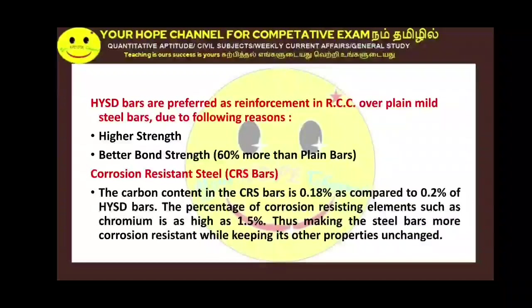If you use high yield deformed bars, the benefit is better corrosion resistance. Corrosion resistance steel has a carbon content of 0.18% to 0.2%. If the carbon content is in this range, you can call it corrosion resistant. Corrosion resistance steel has a maximum of 1.5% carbon. If you add any alloying element, you can change any property and fabricate any desired property.